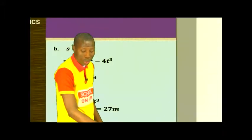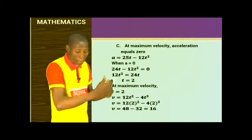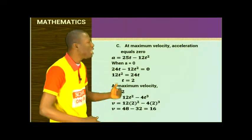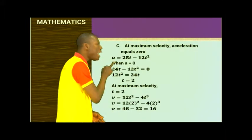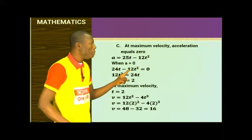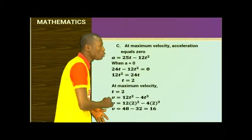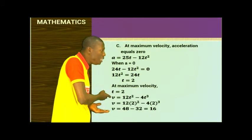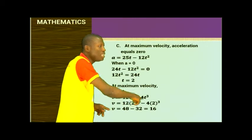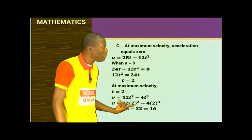For the maximum velocity, at maximum velocity acceleration equals zero. Setting a equals 12t minus 4t² equals zero: t(12 minus 4t) equals 0, giving t equals 0 or t equals 3. Wait — actually setting a equal to zero: 12 minus 4t equals 0, so t equals 2 is not the answer — substituting the correct t into the velocity equation: when t equals 2, V equals 12(4) minus (8) equals 16. So maximum velocity equals 16 m/s.